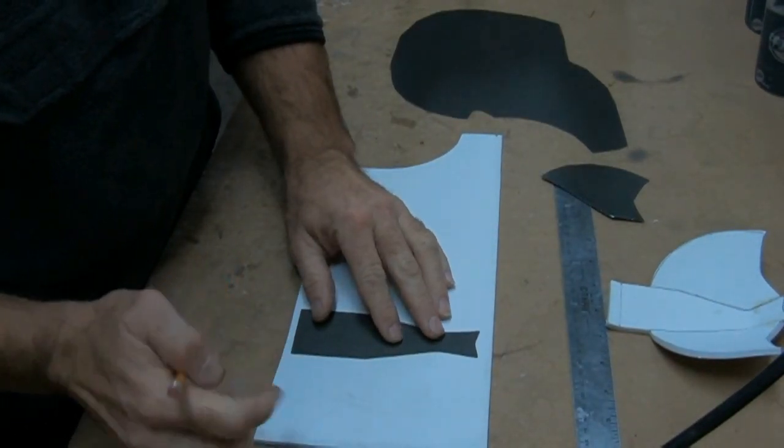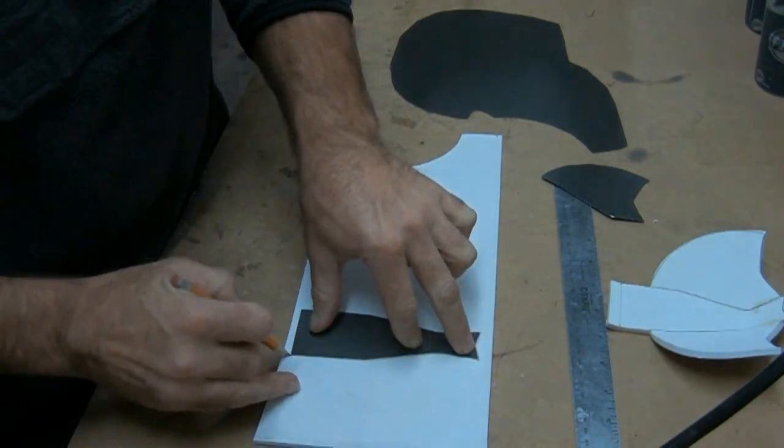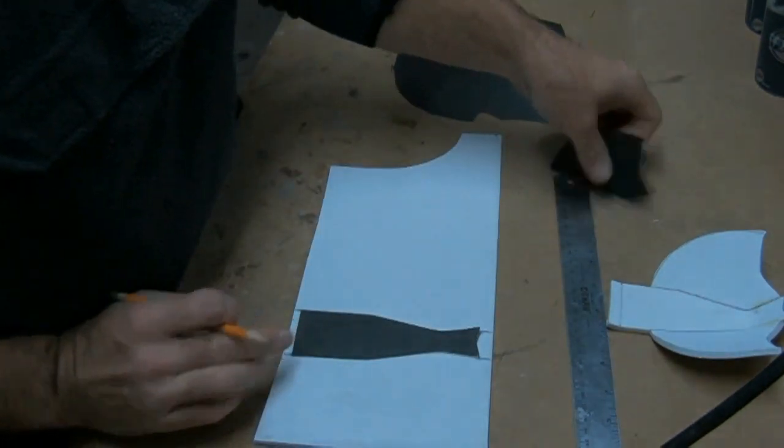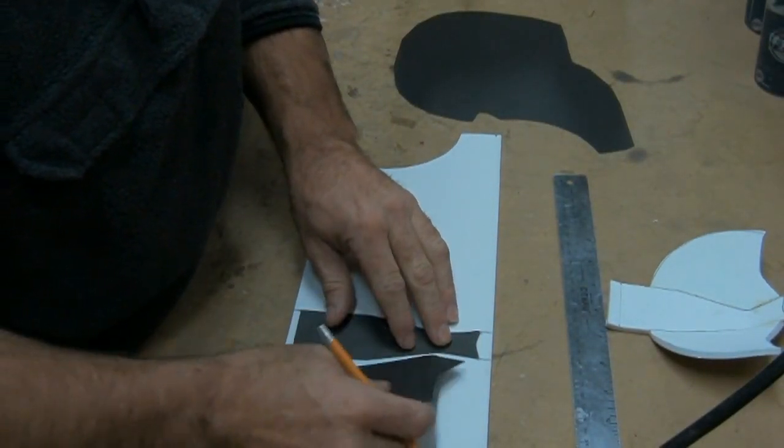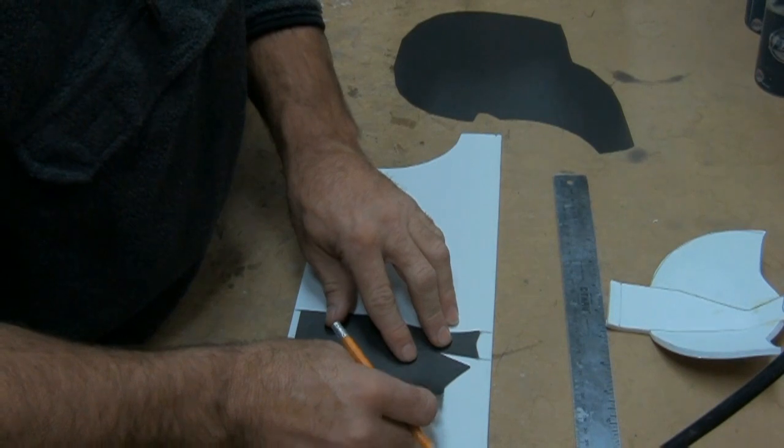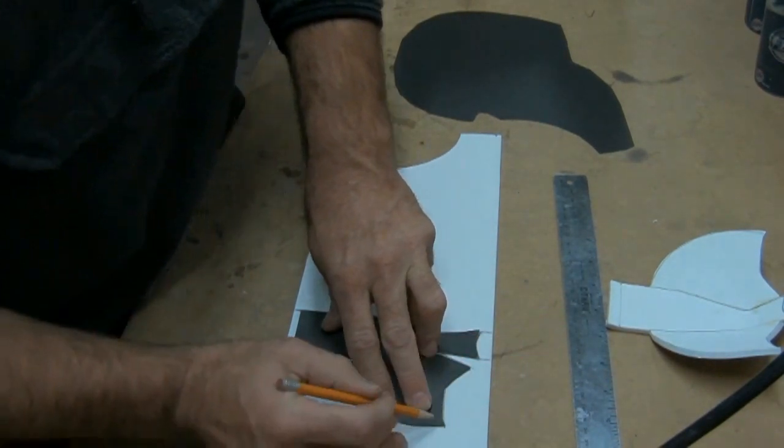Then trace out your nose guard. Add a little extra to the top and bottom of this piece. Then line up your cheek piece with your nose guard and trace that out. You'll need to do this on both sides.